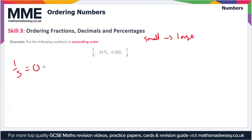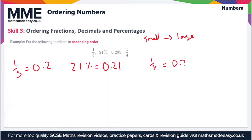One fifth is equal to 0.2. 21% is equal to 0.21, and one quarter is equal to 0.25. Now we have them all in the same form, it's just a case of putting them in order. The smallest of these is going to be 0.2 — that's the one fifth — and then we have 0.205.